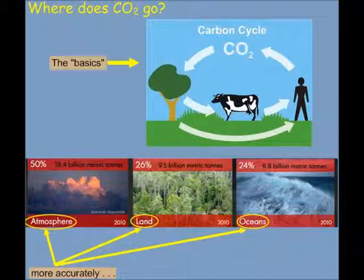Earlier in your education, you may have learned a little bit about the basics of the carbon cycle — where animals, including humans, breathe out carbon dioxide gas and plants breathe out oxygen, which is what animals, including humans, need to survive. In this class we'll learn that it's a little bit more complicated than that. When you breathe out carbon dioxide, about 50% of it enters into the atmosphere, about 26% of it is absorbed by plants, and about 24% of it is absorbed in the ocean — and that's part of what makes carbonic acid in the ocean.